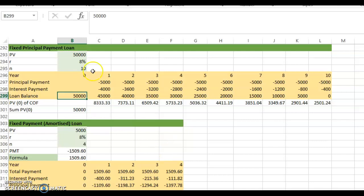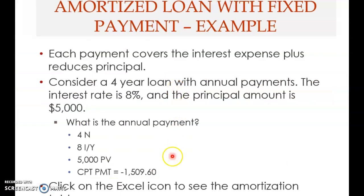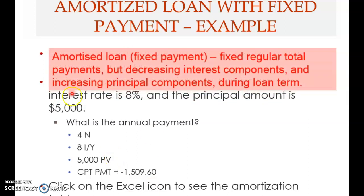That is what we mean by a fixed principal payment loan — the principal amount is fixed over the years. Now let's look at the last type of loan, the fourth type: the amortized loan with fixed payment. Here the total payment is fixed, and this payment includes both interest as well as the principal amount.